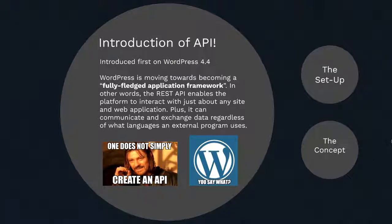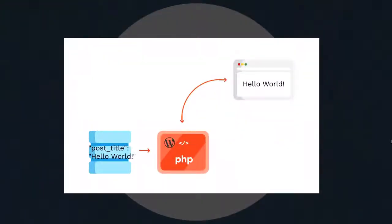The REST API enables the platform to interact with just about any site or web application. Meaning you can use WordPress as your back end, and for your front end you can freely use any framework you want — whether a JavaScript framework or just basic HTML/CSS with jQuery integration, it's up to you. That's how powerful they envision WordPress to be with this API. So how does that work? We all know this is the basic setup of WordPress: you have the themes for the front end, then functions and other built-in things for the back end.